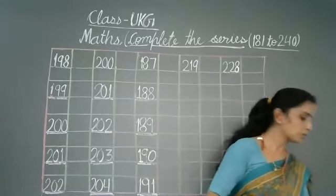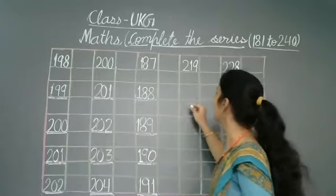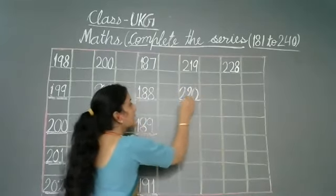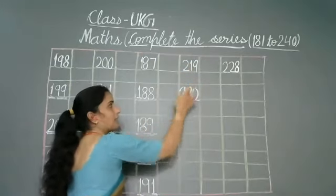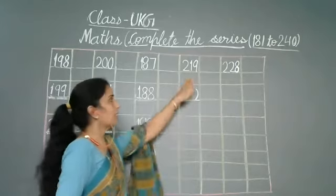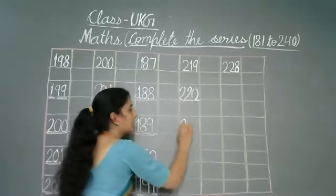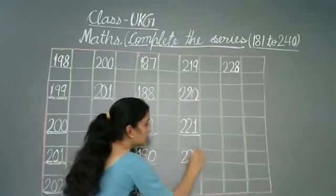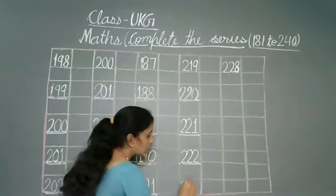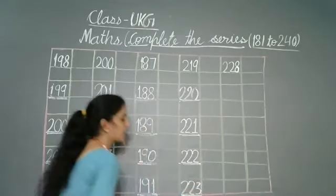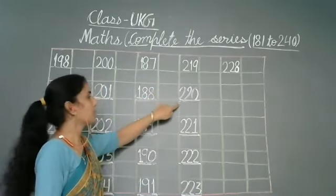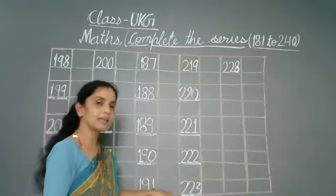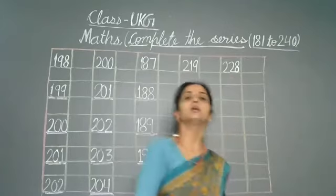Next we have two hundred nineteen. Children, don't get confused — it is two hundred nineteen, not nine-ten. After two hundred nineteen comes two hundred twenty. Then after nine comes zero, after one comes two — so two hundred twenty, two hundred twenty-one, two hundred twenty-two, two hundred twenty-three.